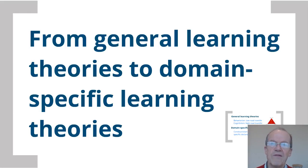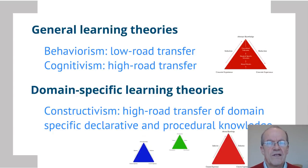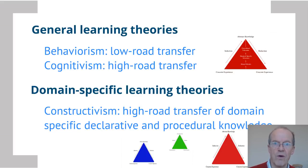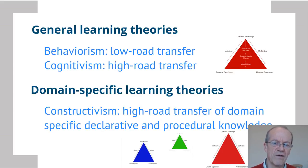Psychologists — both behaviorists and those working from a cognitive perspective — had the idea that they could discover the general laws of learning, because these laws were determined by the way the human information processing system works, or perhaps the way evolution developed and made specific learning mechanisms available. In those days of behaviorism and cognitivism, scholars were focusing on these general unifying laws.